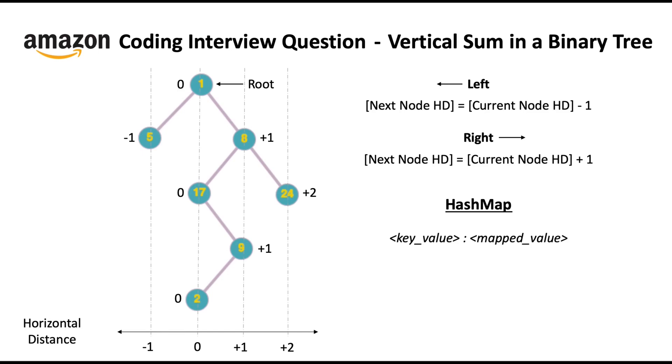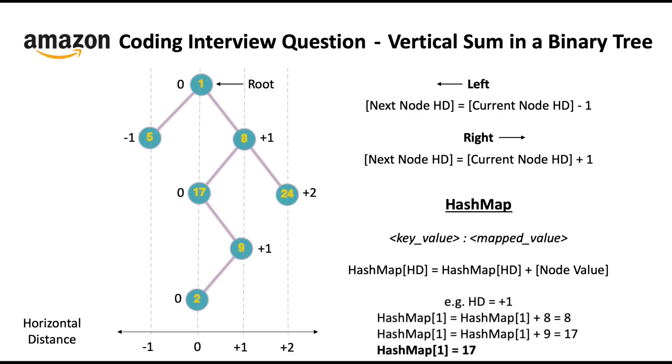So in this problem, it's going to be like HashMap of horizontal distance is equal to HashMap of horizontal distance plus node value. And you can see how we can calculate for the horizontal distance equal to plus 1, which comes out to be 17. So these are the results for horizontal distance minus 1, 0, plus 1, and plus 2, which is the expected output or answer for this problem.